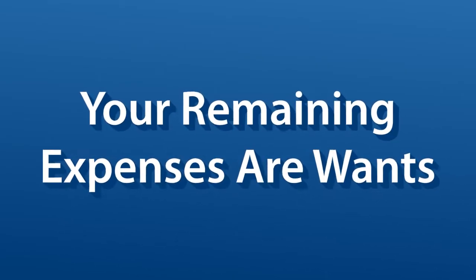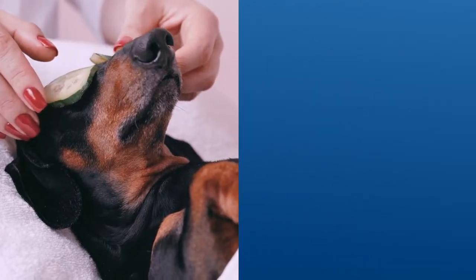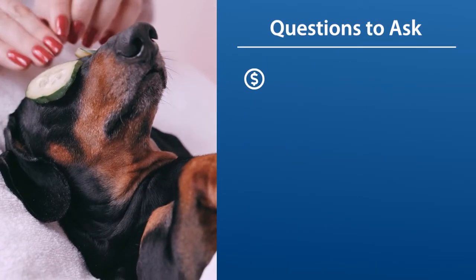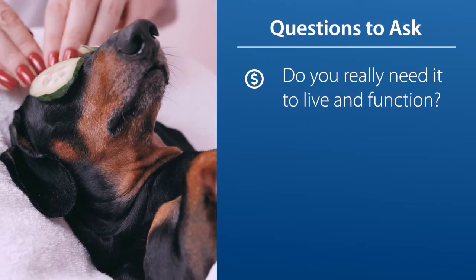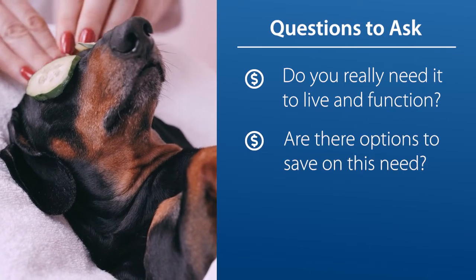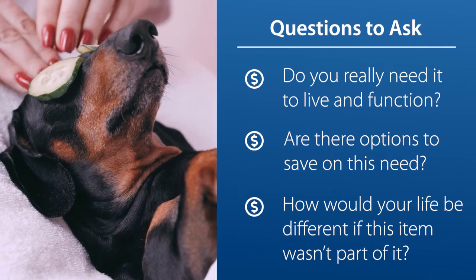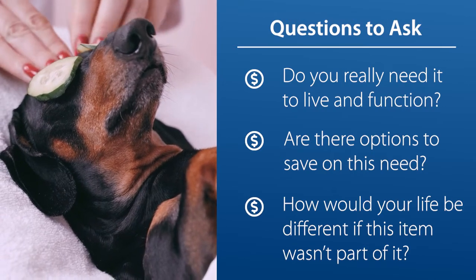When separating these categories in your budget, start with your needs first and be as specific as possible. Then compile your remaining expenses in your wants category. Along the way, ask yourself: do you really need this item to live and function? Are there options to save money on this need? How would your life be different if this item wasn't part of it?